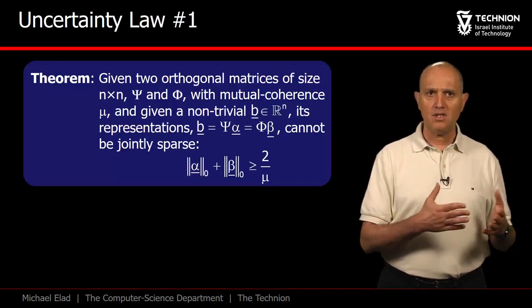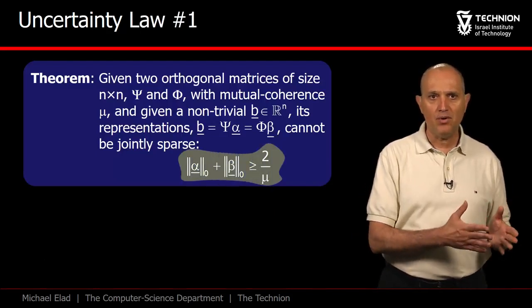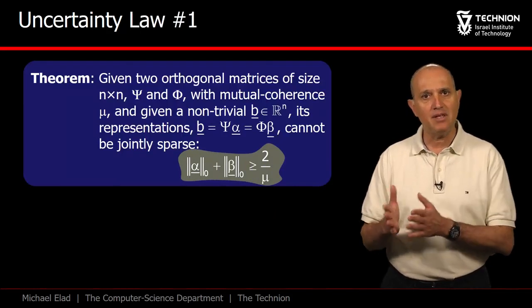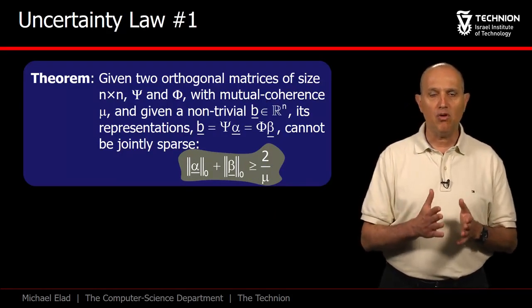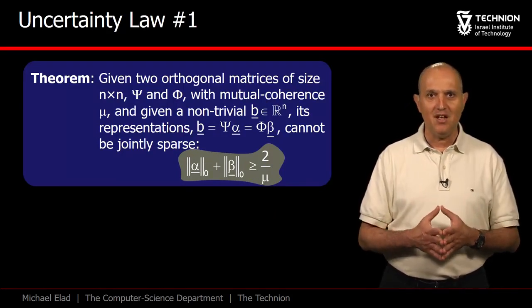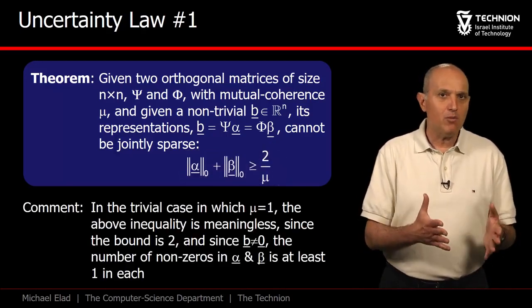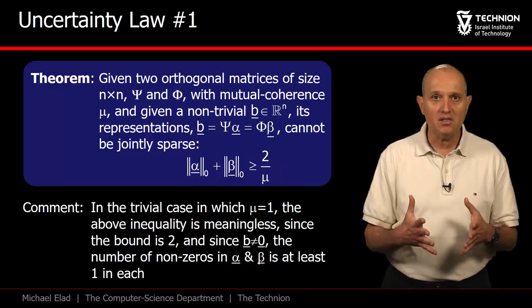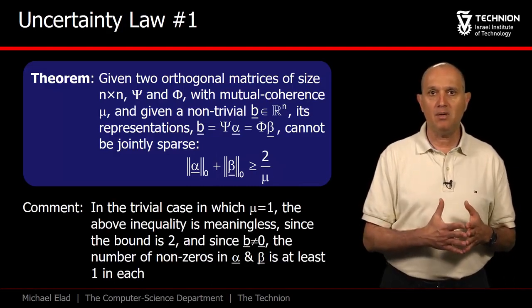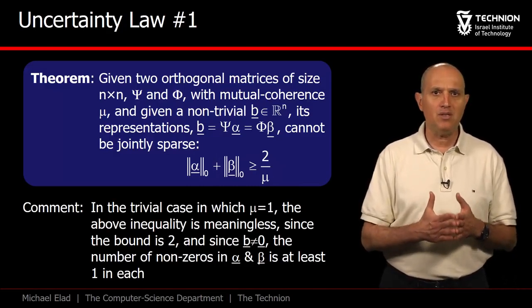So here is the theorem stating that the sum of the number of non-zeros in α and β is lower bounded by 2/μ. As we can see, the coherence plays a key role in this claim. Indeed, if μ equals one—that is, in the maximally coherent case—we get that the lower bound becomes two, which is a non-informative statement.